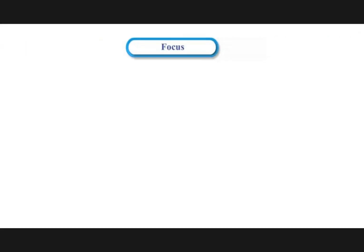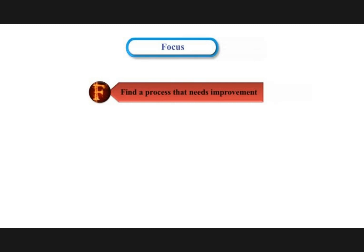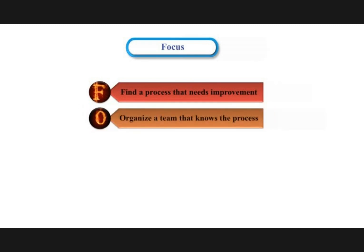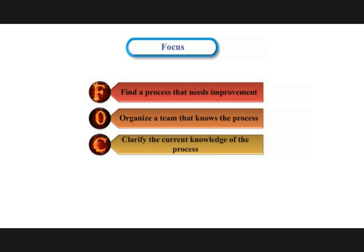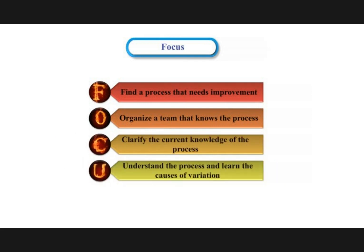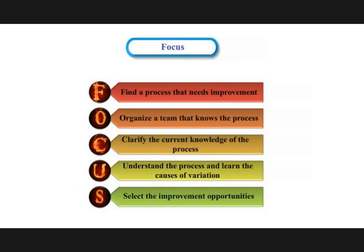The focus of CQI includes: find a process that needs improvement, organize a team that knows the process, clarify the current knowledge of the process, understand the process and learn the causes of variation, and select the improvement opportunities.